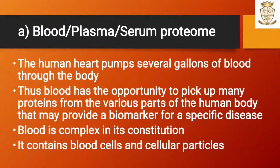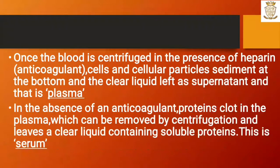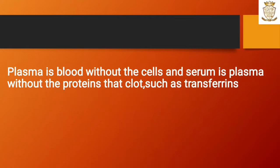The human heart pumps several gallons of blood through the body, so blood has the opportunity to pick up many proteins from various parts of the body, which may provide biomarkers for specific diseases. Blood is complex in its constitution, containing blood cells and cellular particles. When centrifuged in the presence of heparin (an anticoagulant), cells and cellular particles sediment at the bottom, leaving a clear liquid called plasma. In the absence of an anticoagulant, proteins clot in the plasma and can be removed by centrifugation, leaving a clear liquid containing soluble proteins — this is serum. Plasma is blood without cells, and serum is plasma without the clotting proteins such as transferrin.